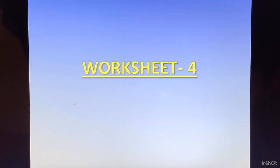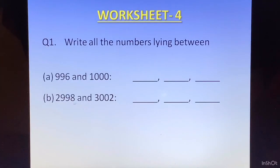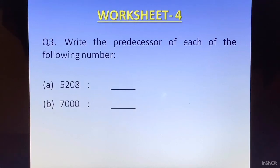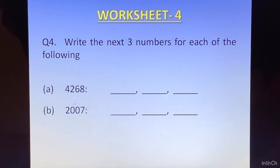Now let us do a worksheet to enhance our understanding. Question 1: Write all the numbers lying between (A) 996 and 1000, and (B) 2998 and 3002. Question 2: Write the successor of (A) 9521 and (B) 3999. Question 3: Write the predecessor of (A) 5208 and (B) 7000. Question 4: Write the next 3 numbers for (A) 4268 and (B) 2007.